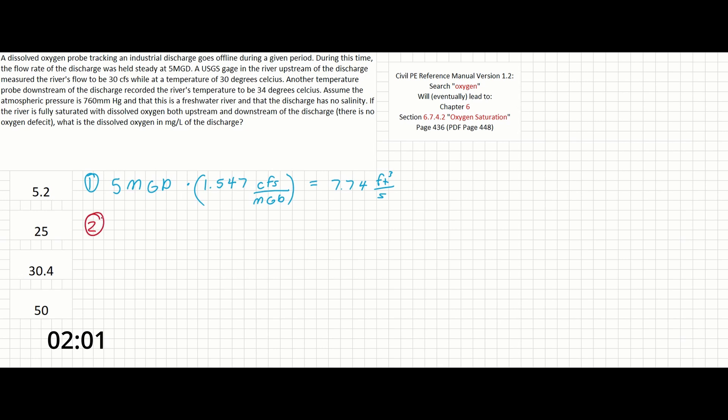Now for step 2, we can find the temperatures given in the problem on the reference table and look up their corresponding DO concentrations. The problem notes that we have no salinity, so we can use the values from the first column where salinity equals 0. The river's flow upstream of the discharge is 30 degrees Celsius. The table tells us that the dissolved oxygen concentration at this temperature is about 7.54 mg per liter.